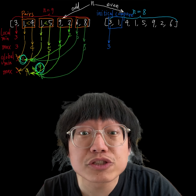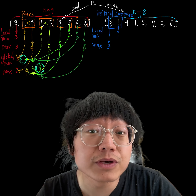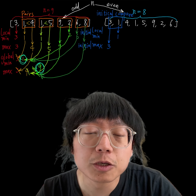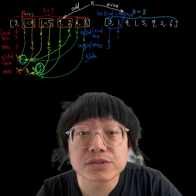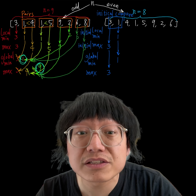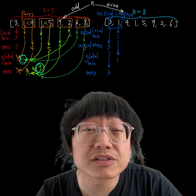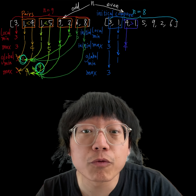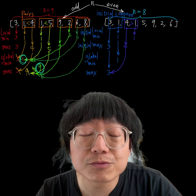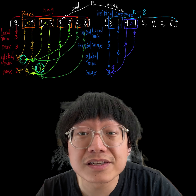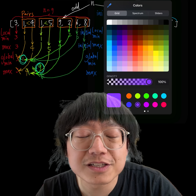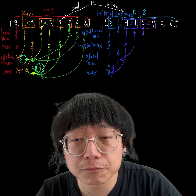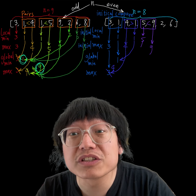Now let's talk about the scenario where n is even. We consider the list 3, 1, 4, 1, 5, 9, 2, 6, with n equals 8. First, we do the initial comparison: we compare the first two elements to establish the initial minimum and maximum. Comparing 3 and 1, the initial minimum is 1 and the initial maximum is 3.